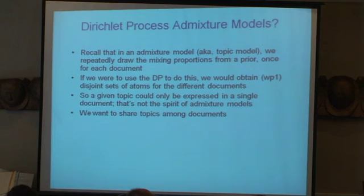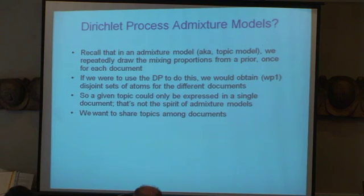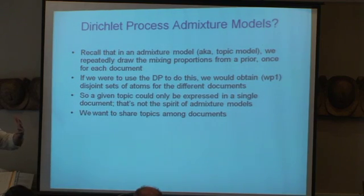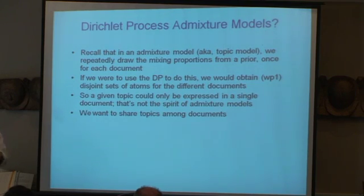What if we tried to do this for admixture models? It fails completely. Remember what an admixture model is — you have a single document and it draws repeatedly from topics, then draws words from those topics. That's a whole little clustering model in and of itself. Every word can come from one of a number of topics within a document, so each word comes in as a customer drawn from a topic and maybe you get a brand new topic emerging. That's one whole document. Now you go to another document over here, you do that whole thing again, you get a different Dirichlet process for that document. With probability one, there will be no overlap in the atoms — you can't do the Dirichlet process for admixture models.